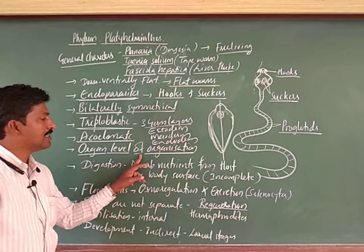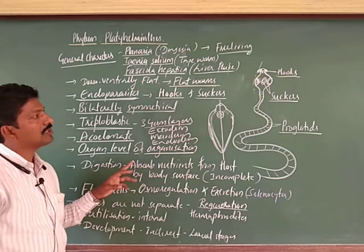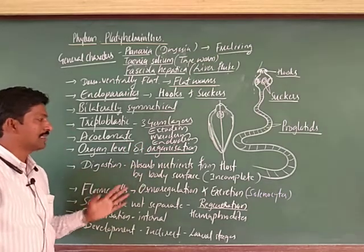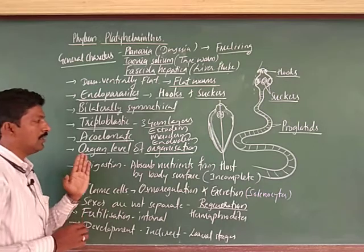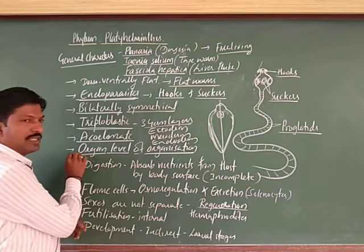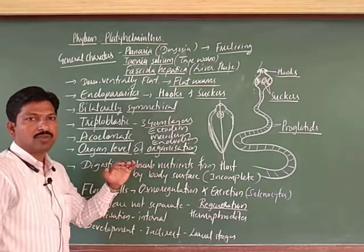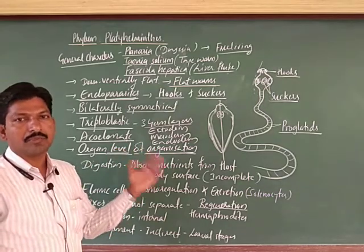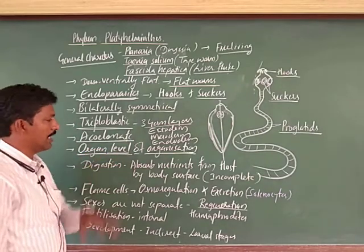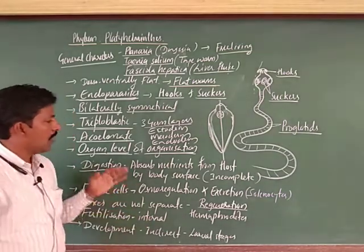Because the body cavity is absent, these animals are called acoelomates. Next, they show organ level of organization. Organs are formed — such as eye-like structures, suckers, hooks, and flame cells — even though a complete organ system is not formed. Hence these animals exhibit organ level of organization, which is one step more advanced than the tissue level organization seen in previous phyla.